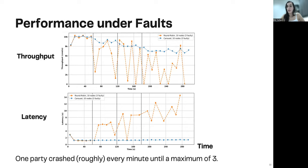In the graph here, you can see both throughput and latency changing with time, when we crash a single party every minute until a maximum of three. The blue line here and down here represents carousel, while the orange one is the round robin approach. We can see that while round robin doesn't perform well under the crashes, for example, here in the throughput, we can see that every time it keeps selecting crashed leaders. While it doesn't perform well, carousel remains steady, both in terms of throughput and in latency. It always remains low.